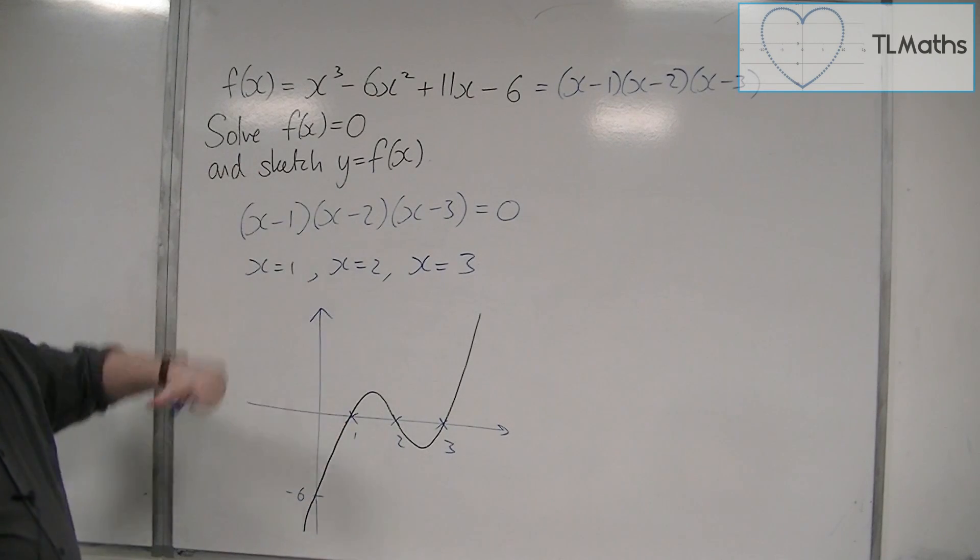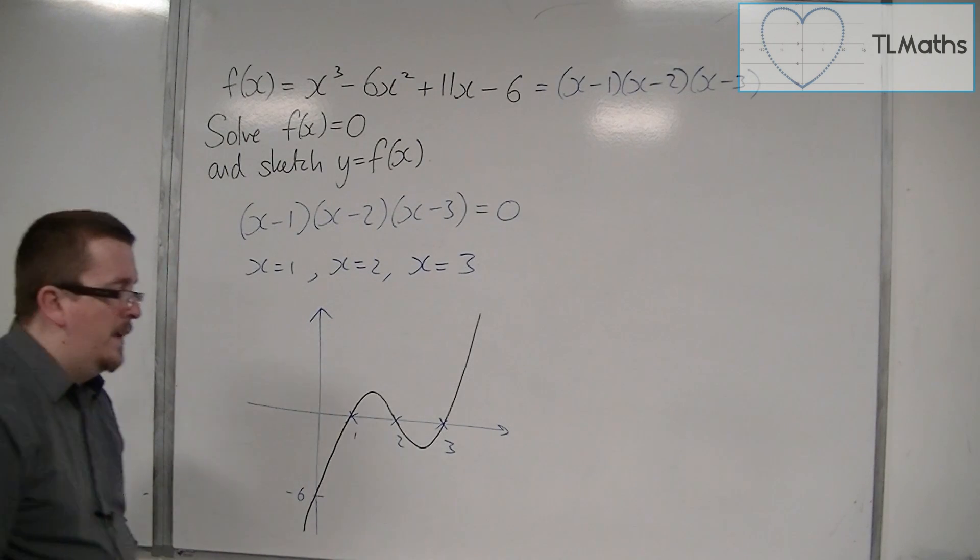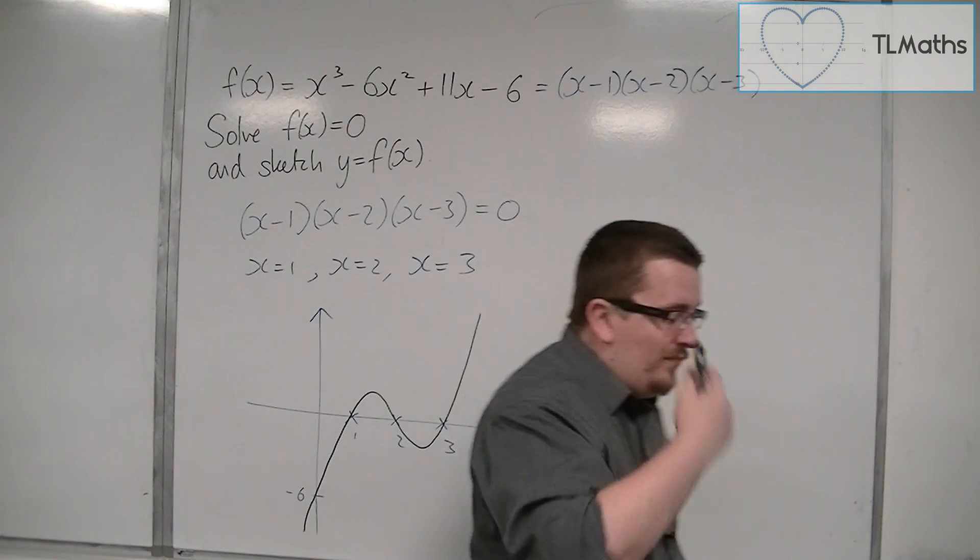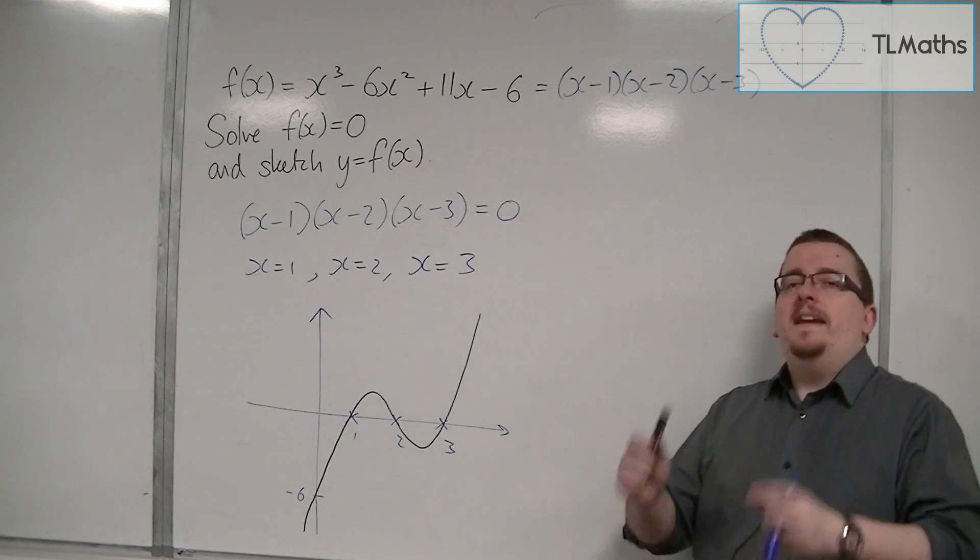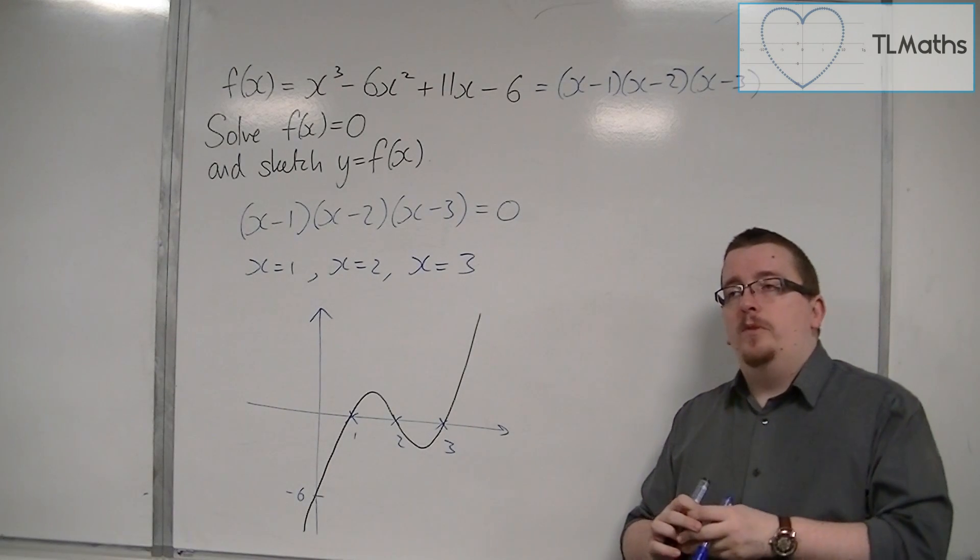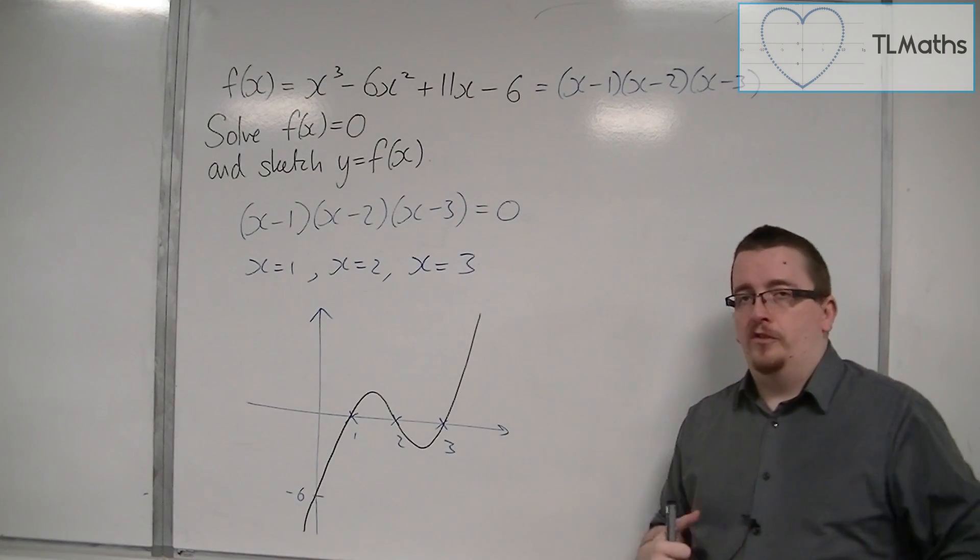And this was me solving f of x equals 0. So what we've seen is that the factor theorem can do the whole job for us. In general, it's quite long-winded, and we would usually just do it once in order to then use polynomial division.